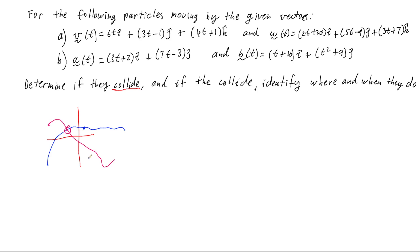What we need for a collision is for the x, y, and z coordinate of the crossing point to be the same at the same time. We need the times to be the same.